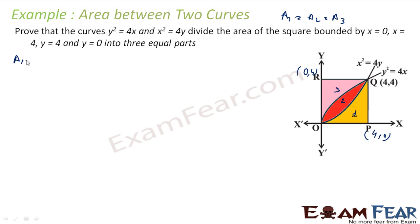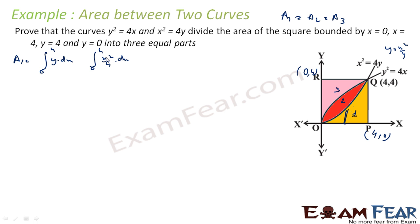Let us find A1. A1 is the integral of y dx from 0 to 4, where the curve is x² = 4y, giving y = x²/4. So A1 = integral of x²/4 dx from 0 to 4 = [x³/12] from 0 to 4, which equals 64/12 = 16/3.